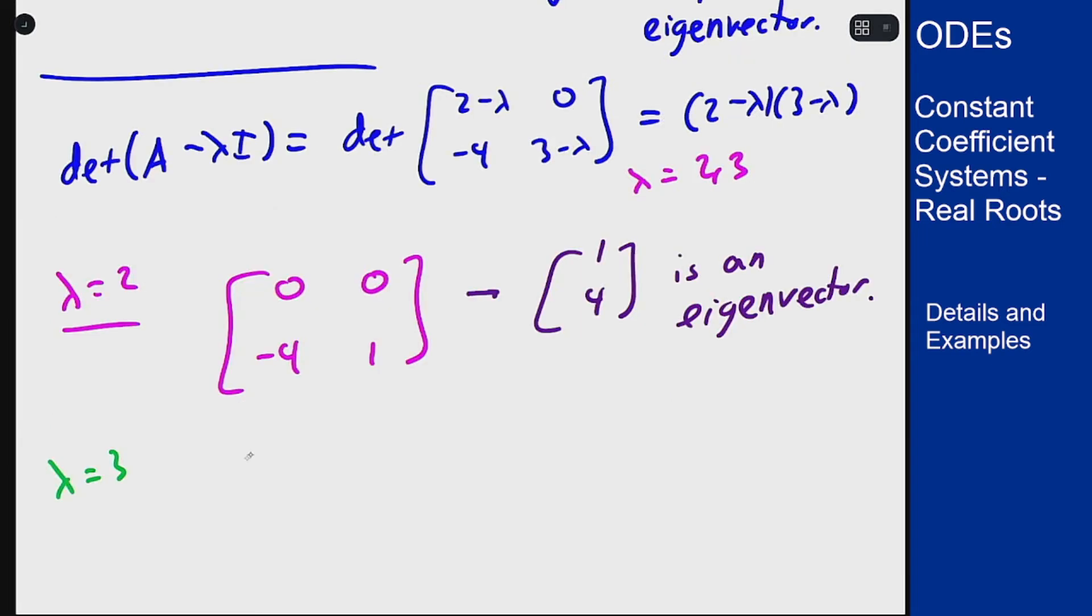And for lambda equals 3, the matrix becomes minus 1, 0, minus 4, 0. The reduction becomes 1, 0, 0, 0, which tells us that v1 must be 0, so that 0, 1 is an eigenvector.